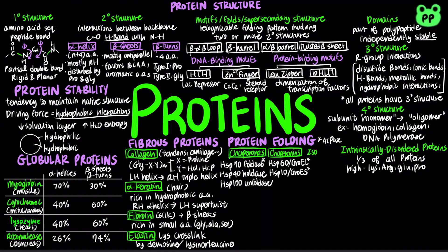Finally, the folding pathway of some proteins requires two enzymes that catalyze isomerization reactions. Protein disulfide isomerase, or PDI, catalyzes the interchange or shuffling of disulfide bonds until the bonds of native conformation are formed. Peptide prolyl cis-trans isomerase, or PPI, catalyzes the interconversion of cis and trans isomers of proline residue peptide bonds, which can be a slow step in the folding of proteins that contain some proline peptide bonds in the cis conformation.